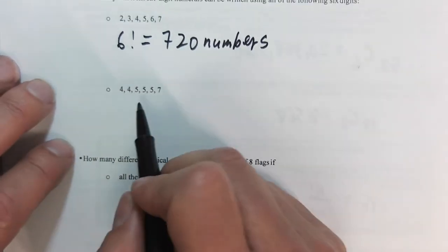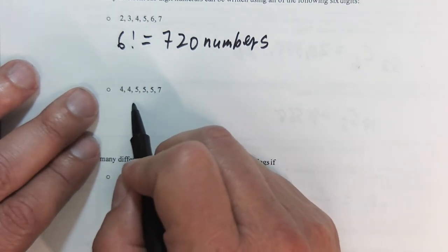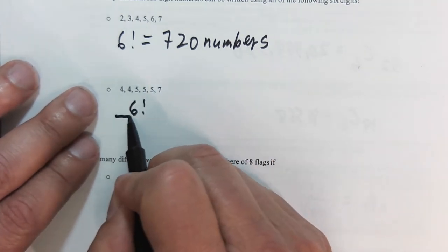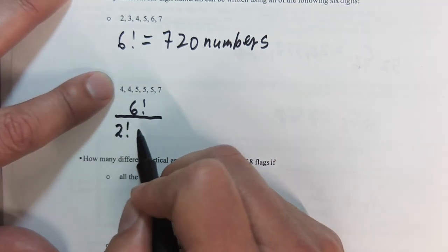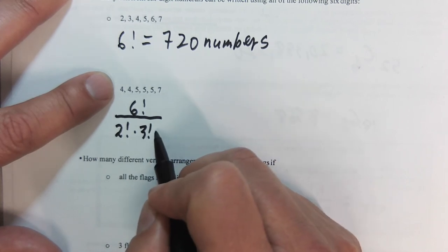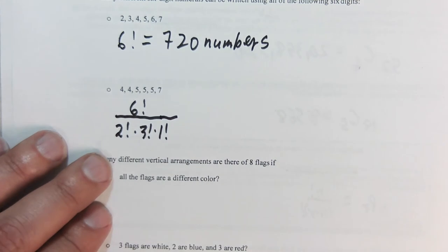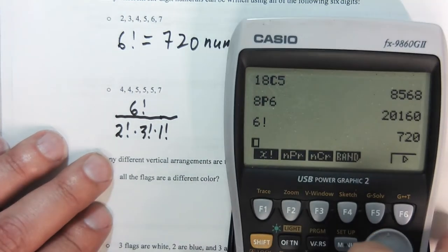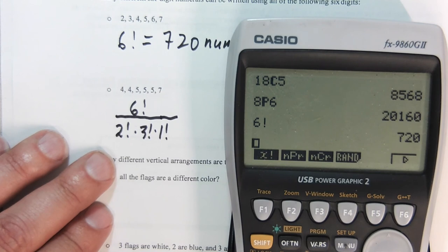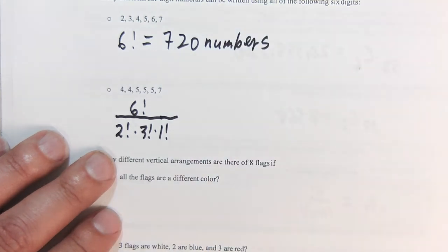However, here we have repeats. So there are six numbers. So it's 6 factorial divided by... How many 4s are there? There are 2. How many 5s are there? There are 3. How many 7s are there? There's 1. Now, 1 factorial is just 1, so we don't need to worry about that so much. But I want to show you how I'm going to put this in my calculator. This is going to be 6 factorial divided by... and I'm going to use parentheses, 2 factorial times 3 factorial. Make sure you use your parentheses correctly. So in this case, there's only 60 combinations.